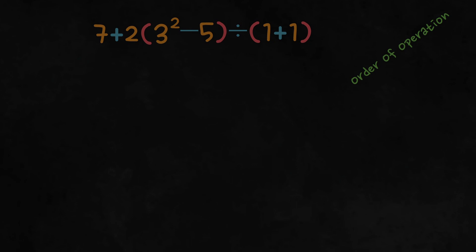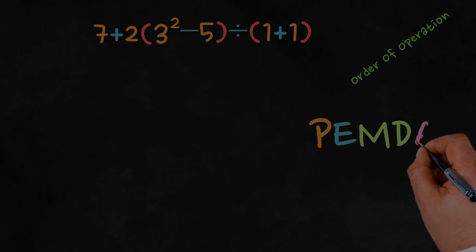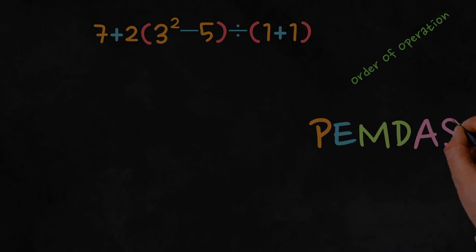In order to solve it, we'll apply the order of operations, commonly known as PEMDAS, which stands for parentheses, exponents, multiplication and division from left to right, and addition and subtraction. Let's get started.